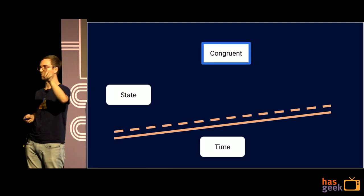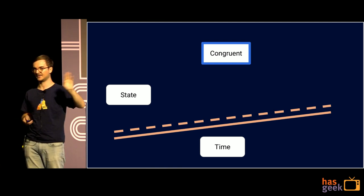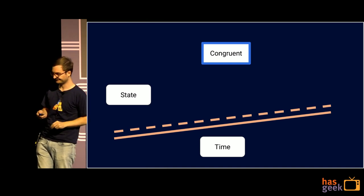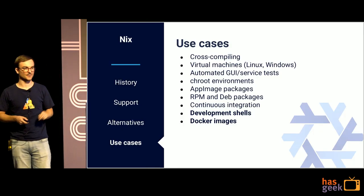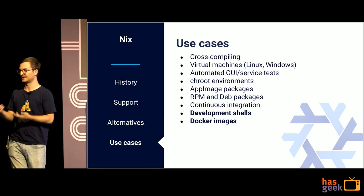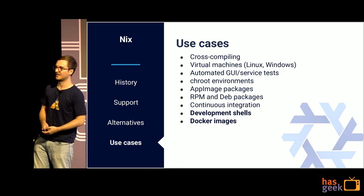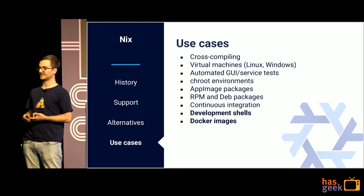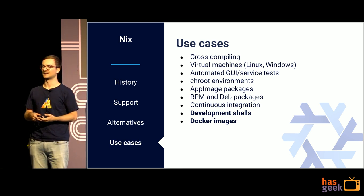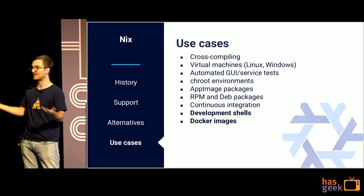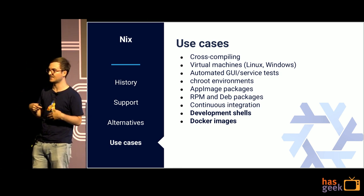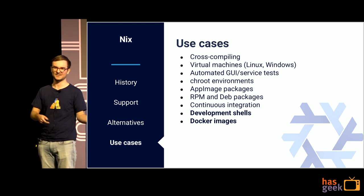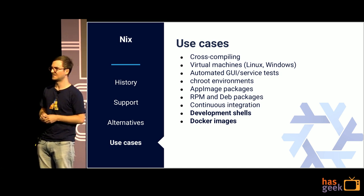This idea applies to a lot more than what Puppet, Chef, and Ansible apply to. We can use Nix to do any type of system configuration — virtual machines, cross-compiling, GUIs. People use this for testing GUIs, and people use it for CI. My team uses it for CI as well. You can build Debian packages, you can build app images. All of these different systems you can use with just one tool, which I think is really, really incredible.